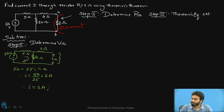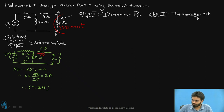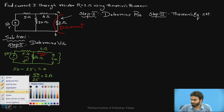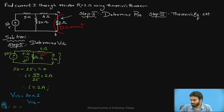We are interested in the voltage developed across the output port. The voltage developed across the output port is the voltage across 20 ohms plus the voltage across the 4 ohm resistance. As you can see in the given circuit, the voltage developed across 4 ohms is 0 volts, because there is no current flowing through it. Hence VTH equals the voltage developed across the 20 ohm resistor only, which is 20 times 2 amperes, giving VTH equals 40 volts.